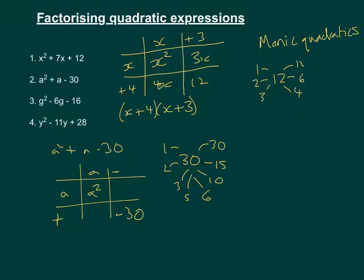So 6 take away 5 is going to give us 1. So we're going to have positive 6 and minus 5. So in our brackets, we've got a plus 6 and a minus 5.